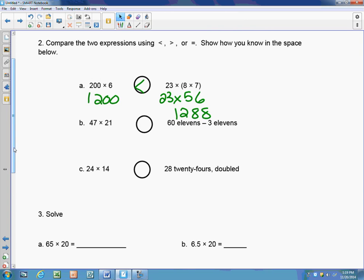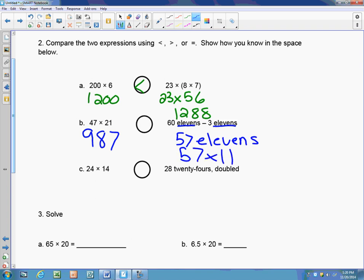The next question, I see 47 times 21, and 47 times 21 is 987. And then over here I have 60 elevens minus 3 elevens. So what I'm going to do is, since they have the same unit, I'm going to do this subtraction, which gets me to 57 elevens. And when I have 57 elevens, it really means 57 times 11. So 57 times 11 is 627. So 987 and 627, this answer is greater.